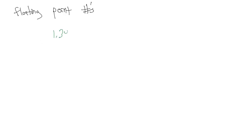In this video we're going to go over floating point numbers. A floating point number is any number that has a decimal — for example, 1.357 is a floating point number. The floating point refers to the decimal place. The issue in computers is how do we represent floating point numbers? We can do integers pretty easily, but how do we do floating point numbers?